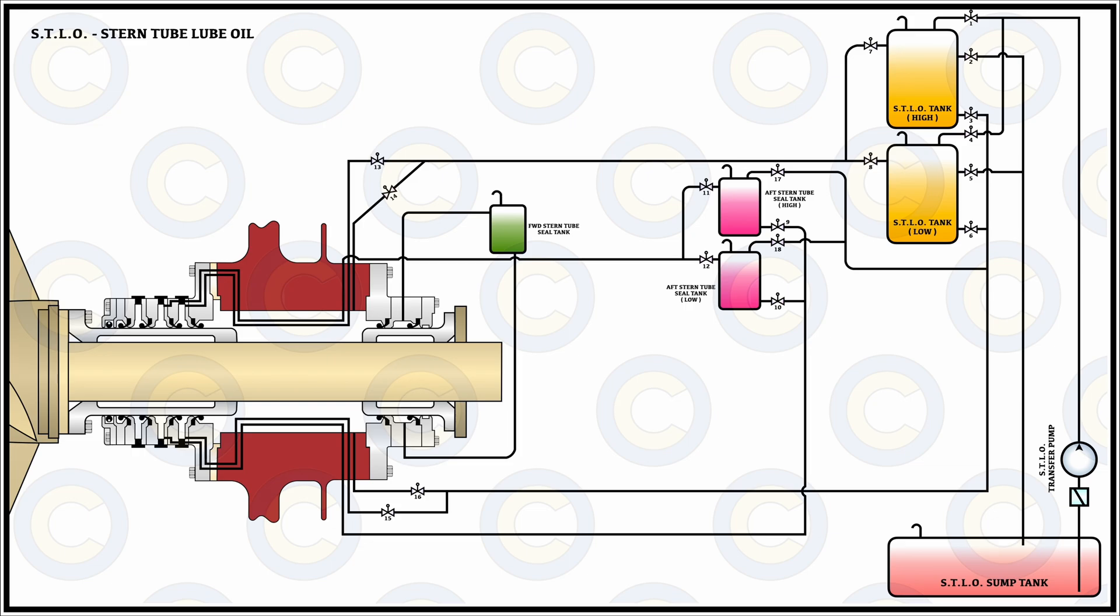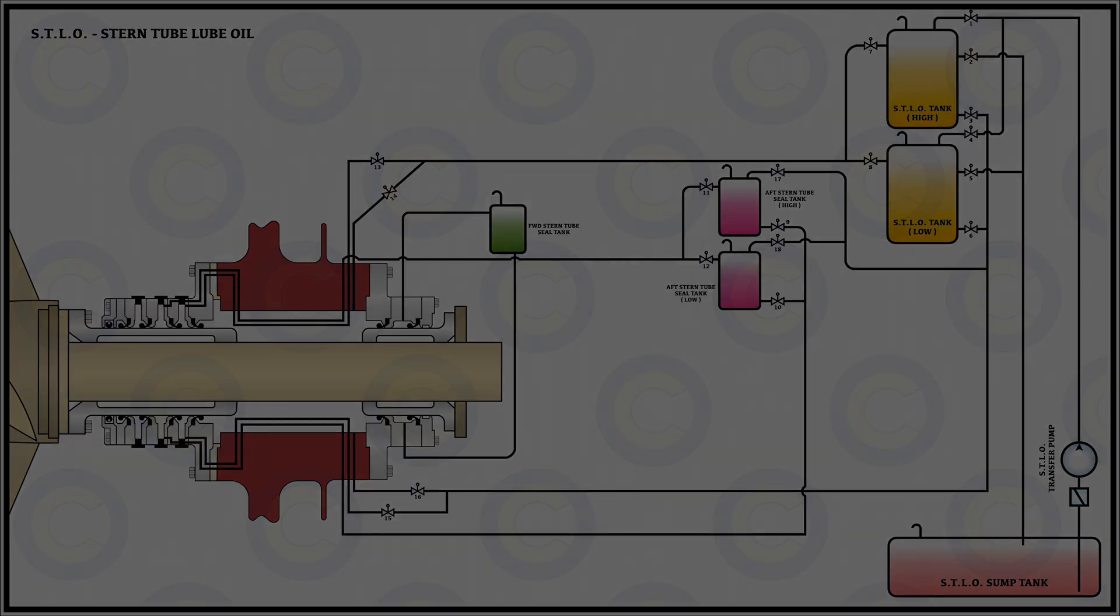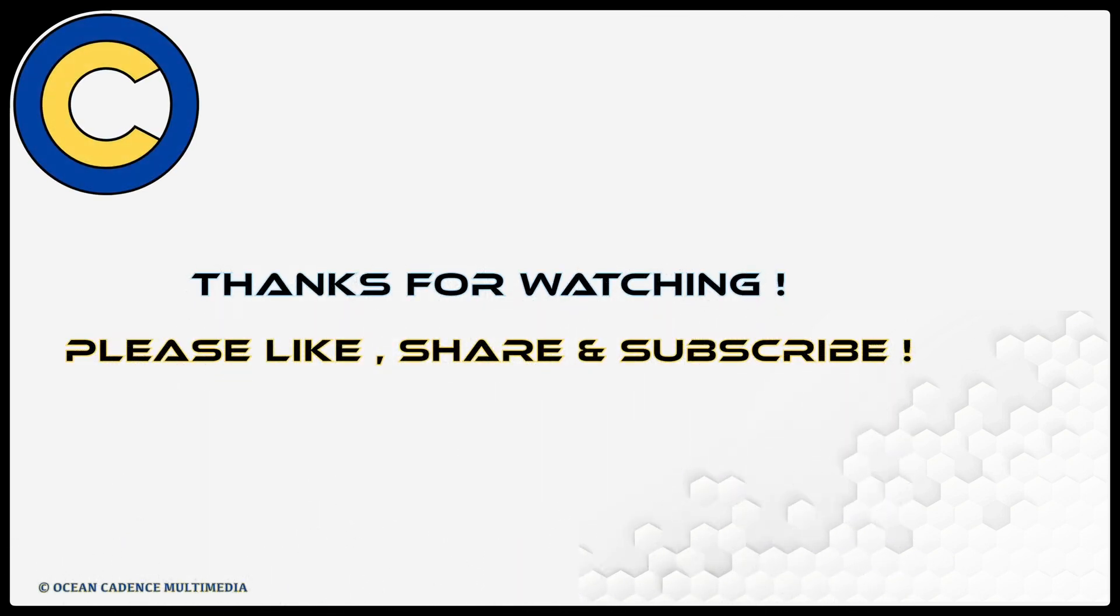This helps us to understand this compact yet effective design of the stern tube system, or the stern tube bearing, that has been used for a very long period of time on board ships. In continuity of it, we in the next video would also be discussing the different elements that are related to the troubleshooting of such stern tube systems, the lineup of valves under different cases of emergencies, and the other practical aspects related to the operation of such a stern tube system.